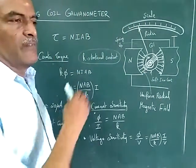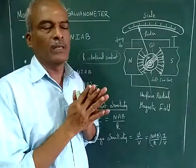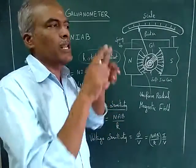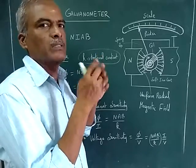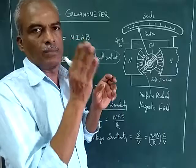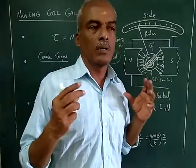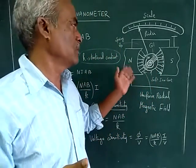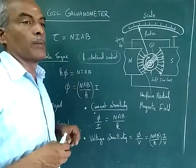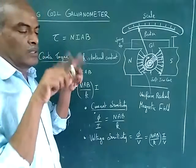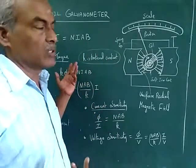The deflecting torque depends on: the number of turns — if you increase the number of turns, torque increases; the current — if current increases, torque increases; the area of the coil — small area means small deflection, large area means large deflection; and the magnetic flux density — the strength of the magnetic field established between the north and south poles on the coil.